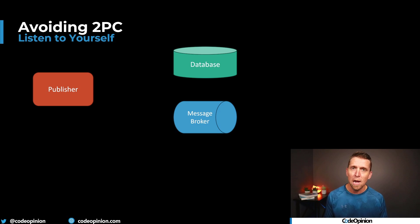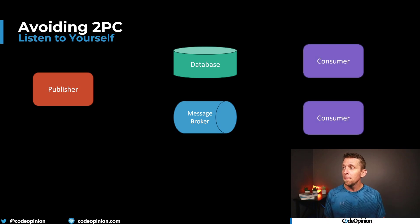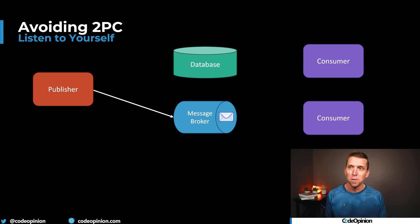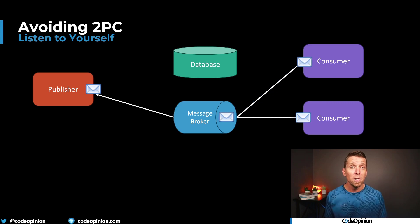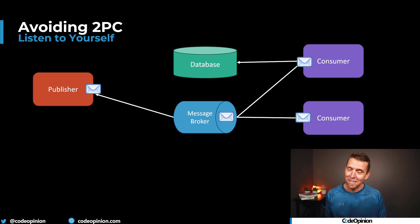The first issue is with events and publish-subscribe — you can have zero or many different consumers for an event. So when we publish that order placed event to our message broker, we essentially have three consumers: our publisher turned consumer, plus let's say two other consumers, all consuming concurrently. This means one consumer's job might be to send a confirmation email, and when it reaches out to the database to get the order details, they're not there — because we had a race condition. The publisher listening to itself hasn't even placed the order yet. That's problem one: we've said something happened but it really hasn't.